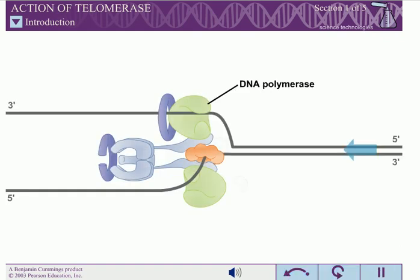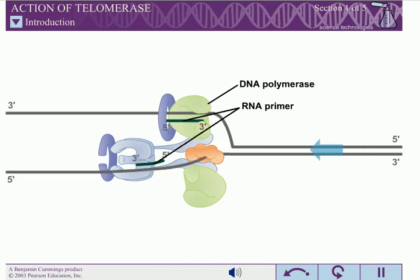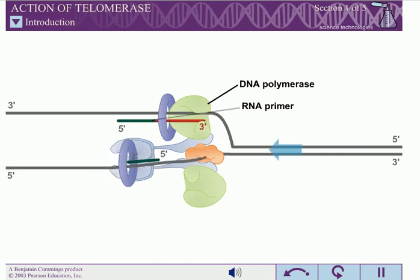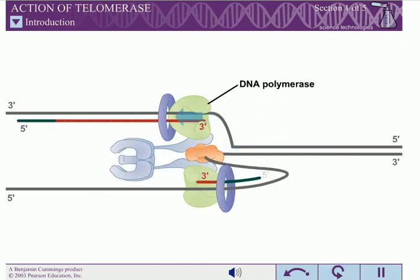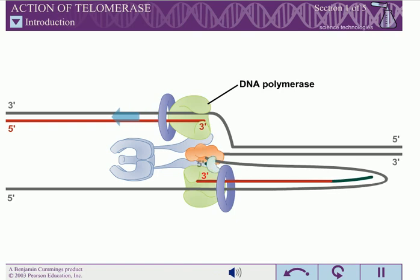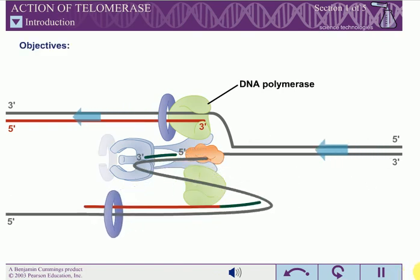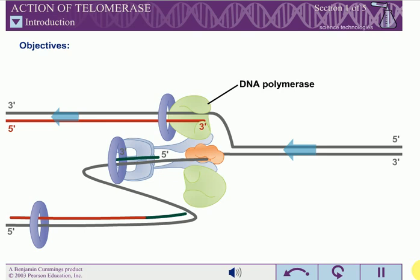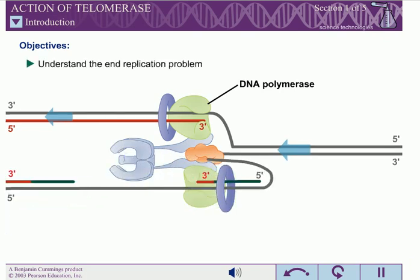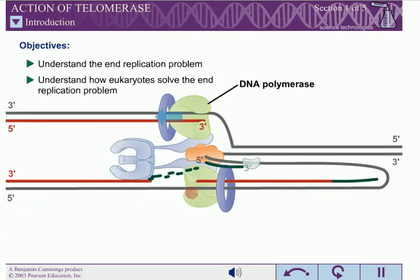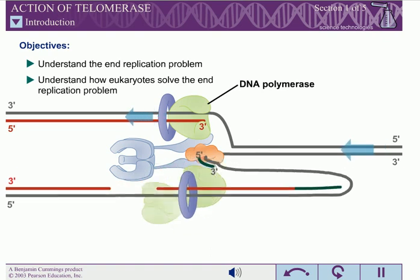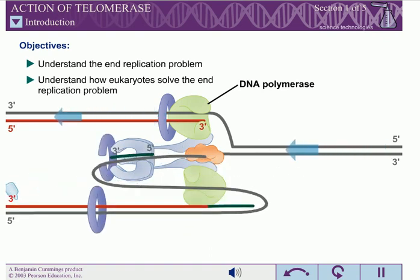DNA polymerase requires an RNA primer to initiate DNA synthesis. This requirement creates a dilemma for the replication of the ends of linear DNA molecules. When you have completed this exercise, you should understand the end replication problem and understand how eukaryotes use telomerase to solve the end replication problem.